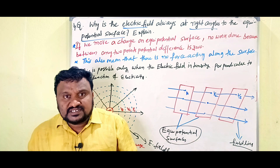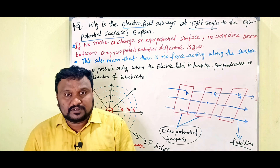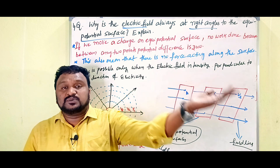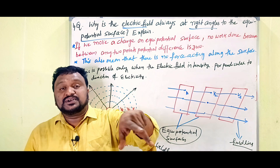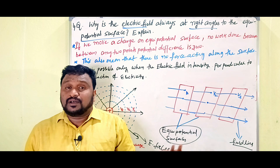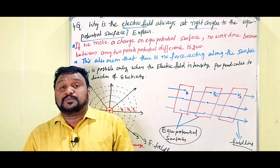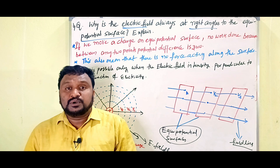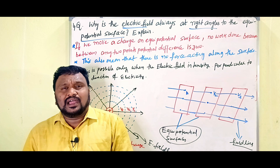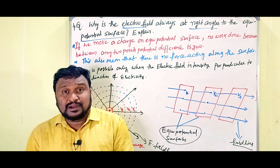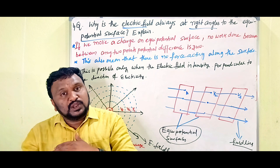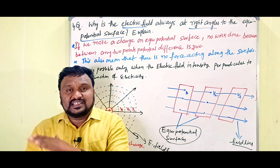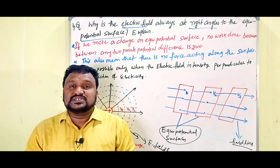If you want to move any charge on the equipotential surface, there is no need to do any work. Because if there is any change in potential difference then we have to do some work, but when we consider two points which have the same potential, the potential difference is zero. If the potential difference is zero, we can move the charge without doing any work. This means there is no force acting along the equipotential surface.